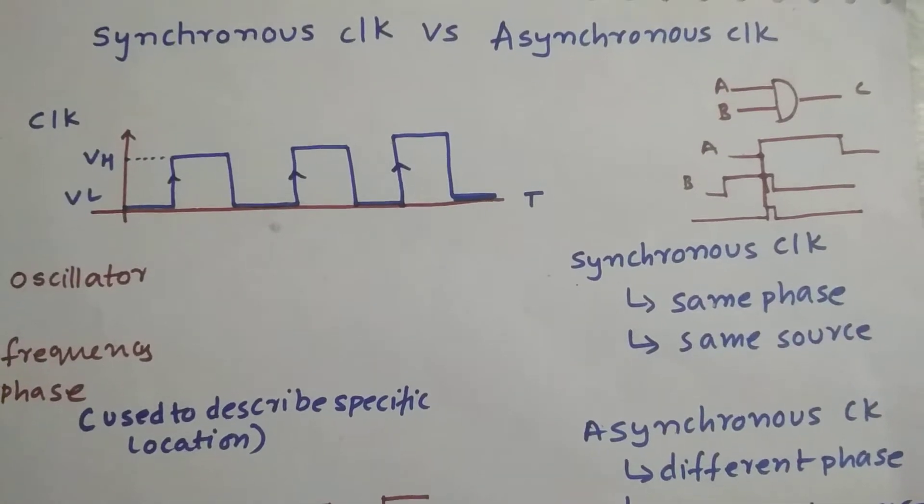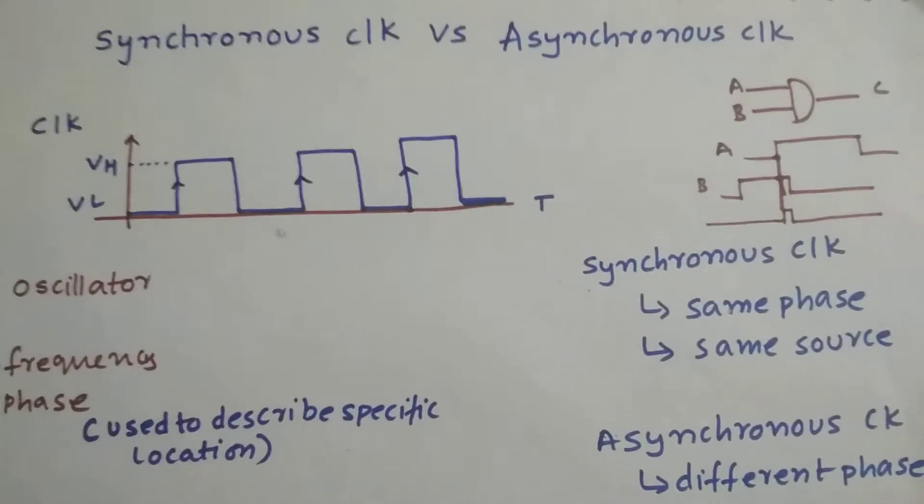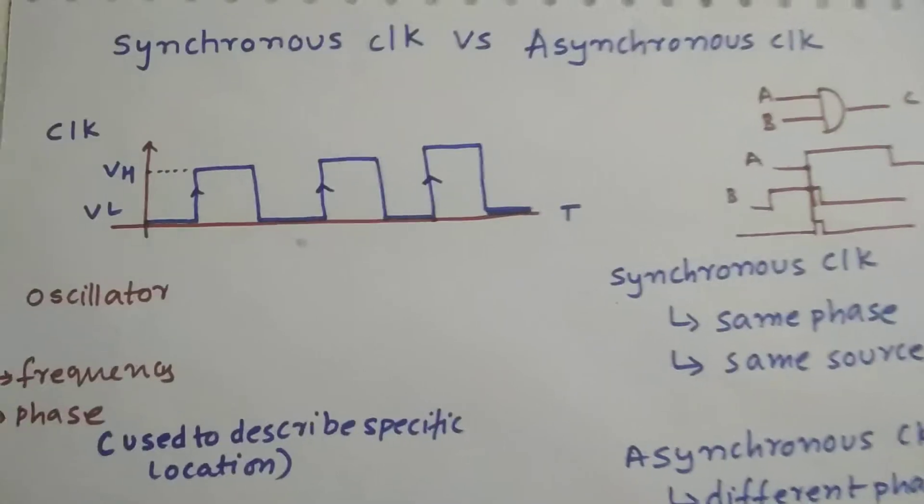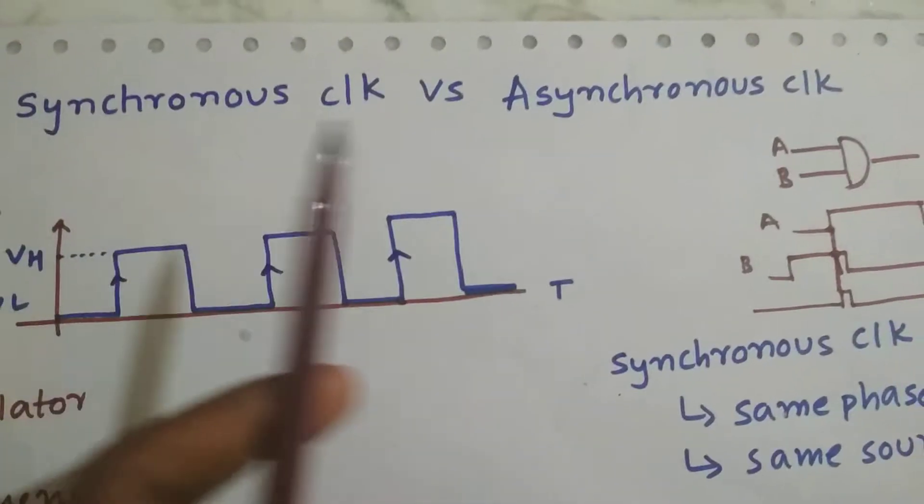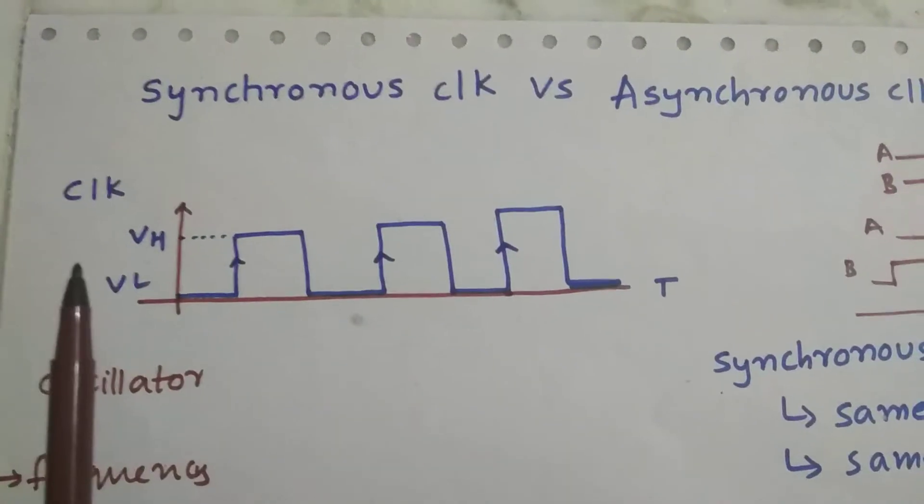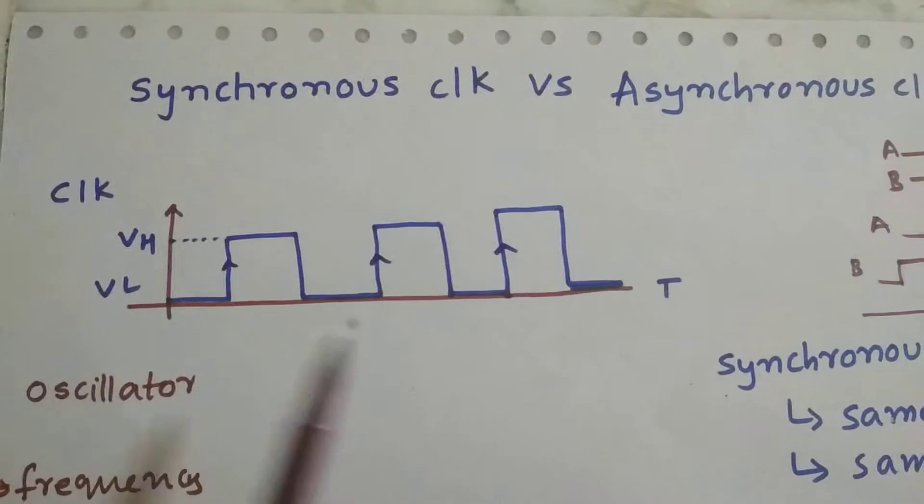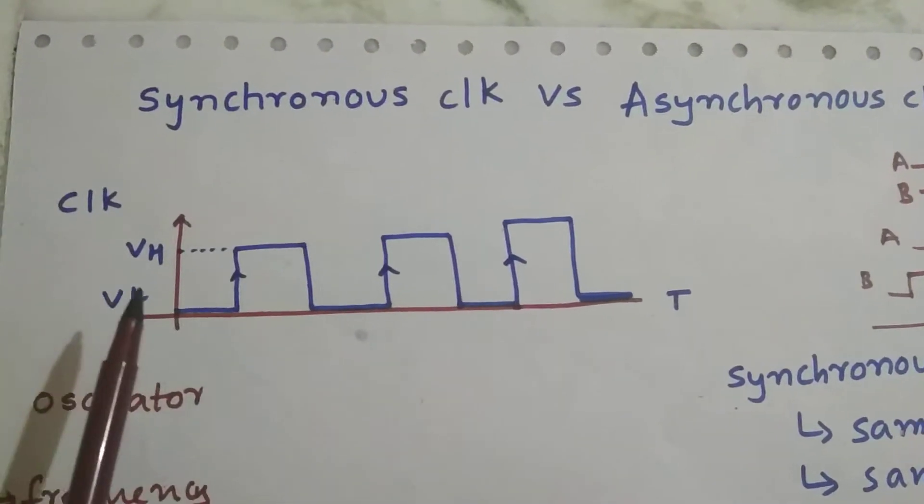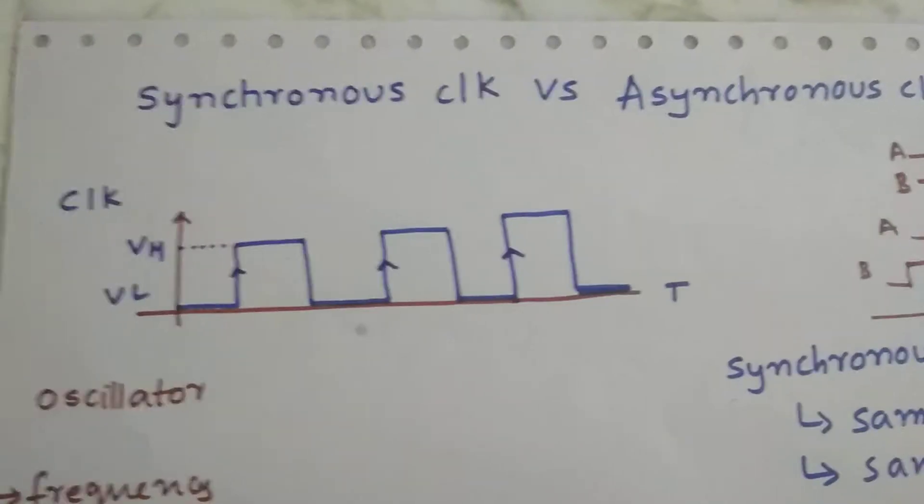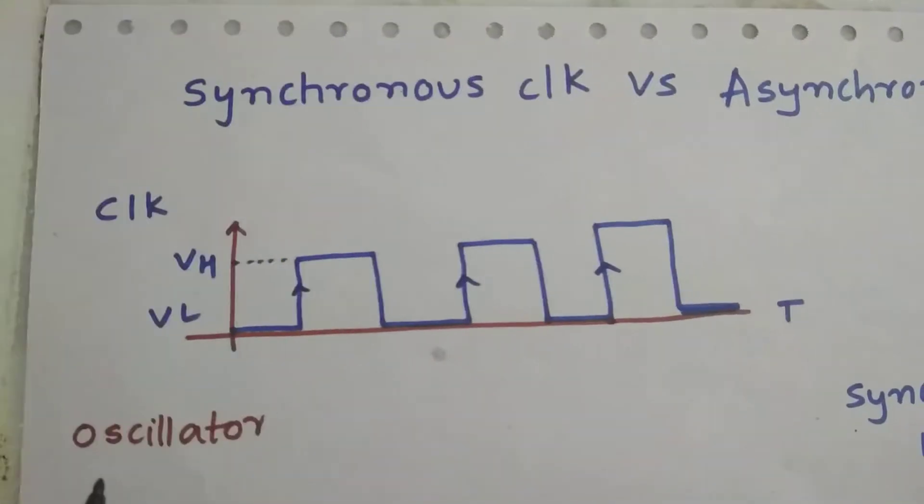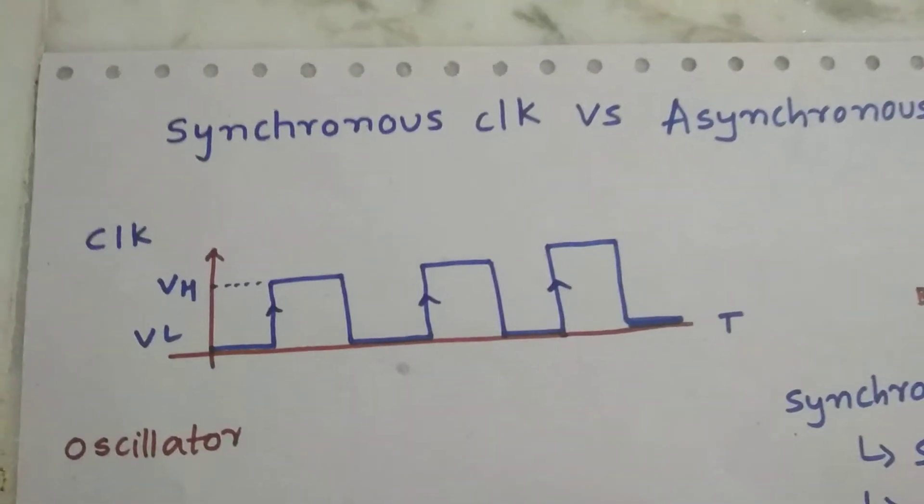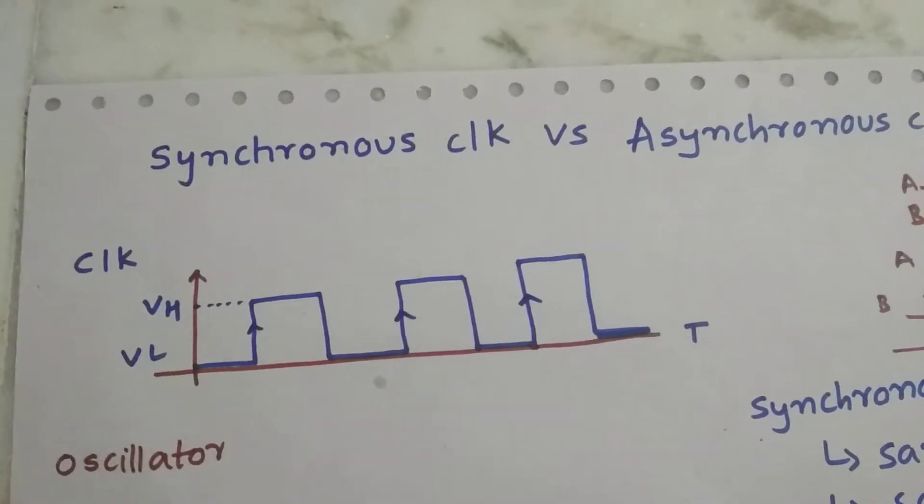Back to another interesting topic: the difference between synchronous clock and asynchronous clock. Before going into the difference, I want to talk about the clock. Clock is basically a square wave which has two levels - low level and high level. It is generated using an oscillator.